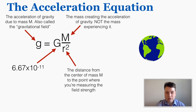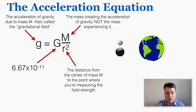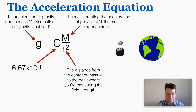Moving on to the acceleration equation: it tells you the acceleration of gravity that any object will experience at a certain distance from another object. Lowercase g is still the acceleration of gravity, now for any point and any object. It equals the same capital G times the mass creating the acceleration — not the mass experiencing it. Since all objects accelerate at the same rate of gravity, the mass in this equation is always the one creating the gravity, like the earth, not the object being dropped.